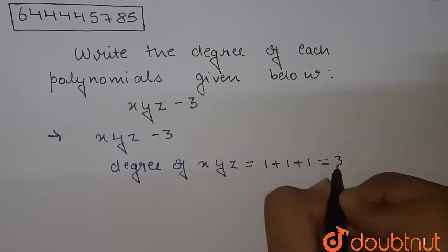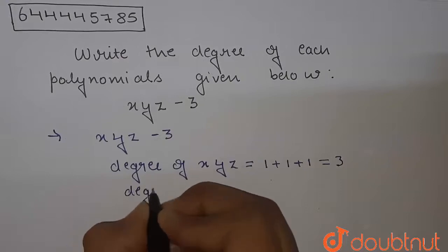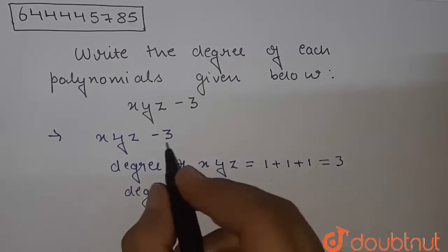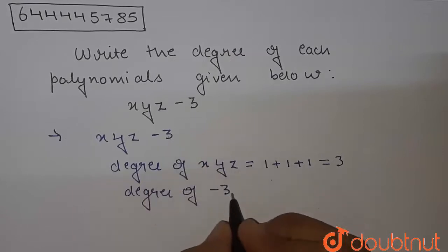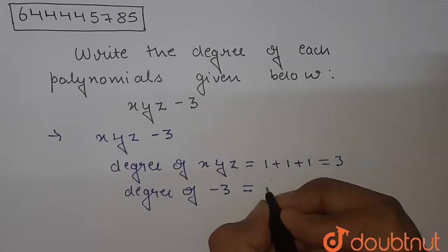Now if we see this term, the degree of minus 3. This is constant, or we can say that x is to the power 0, so its degree is coming equal to 0.